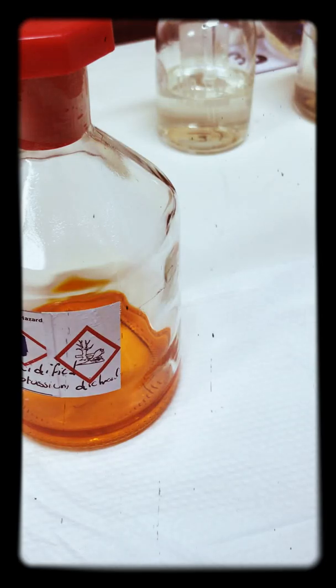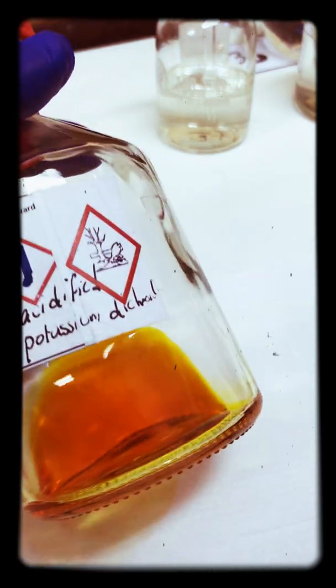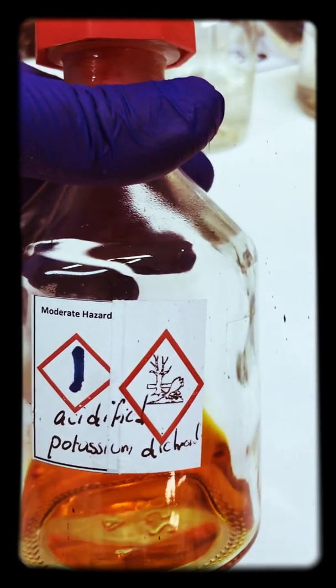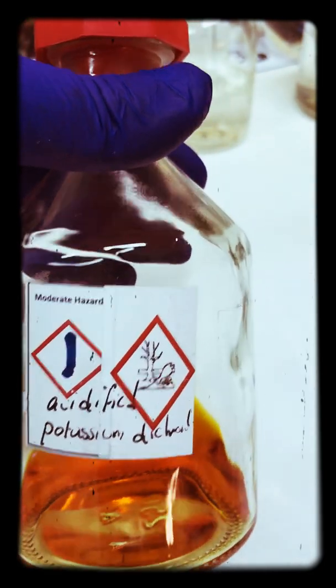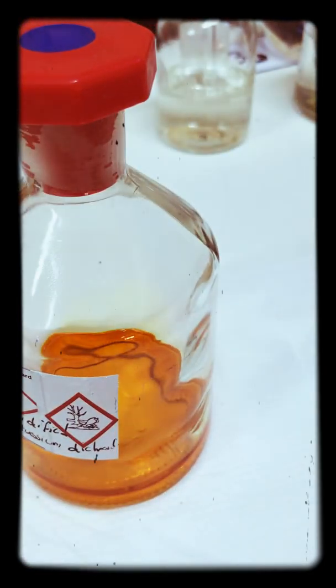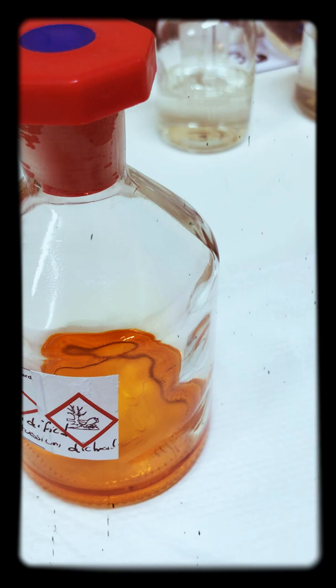Hi folks, this is to demonstrate the oxidizing agent properties of acidified potassium dichromate. Dichromate as an ion is Cr2O7 2- with an overall two minus charge. That means the chromium inside the dichromate has an oxidation state of plus six.